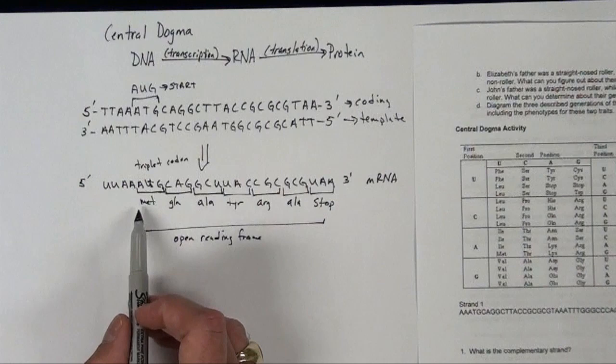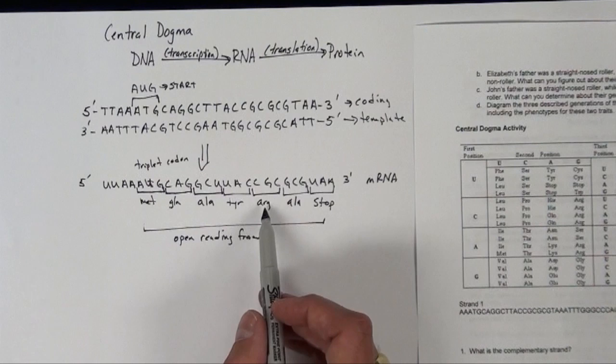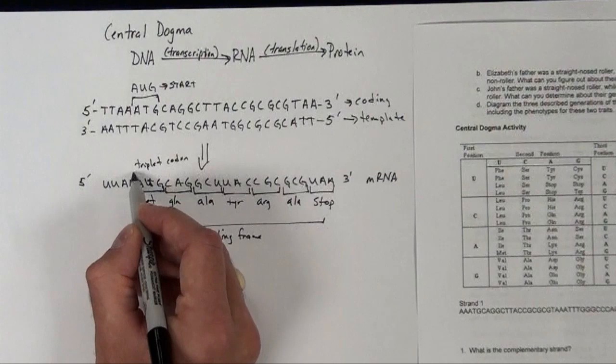So here's our protein or our amino acid sequence. Methionine, glutamic acid, alanine, tyrosine, arginine, alanine, and then eventually a stop codon. This little fragment here is a piece of RNA, but it's not actually translated into protein.